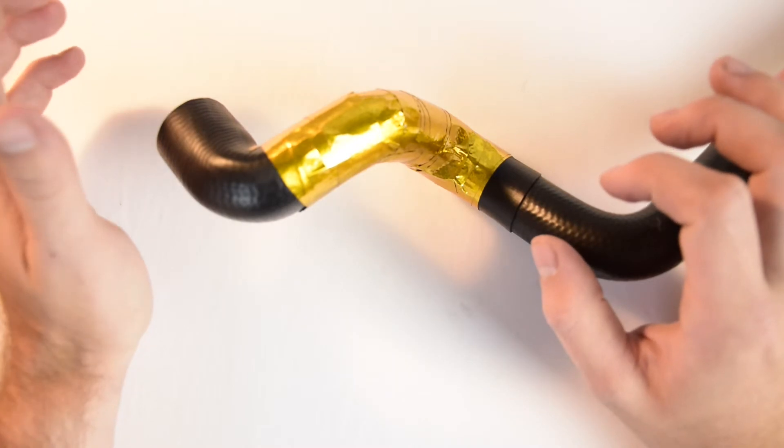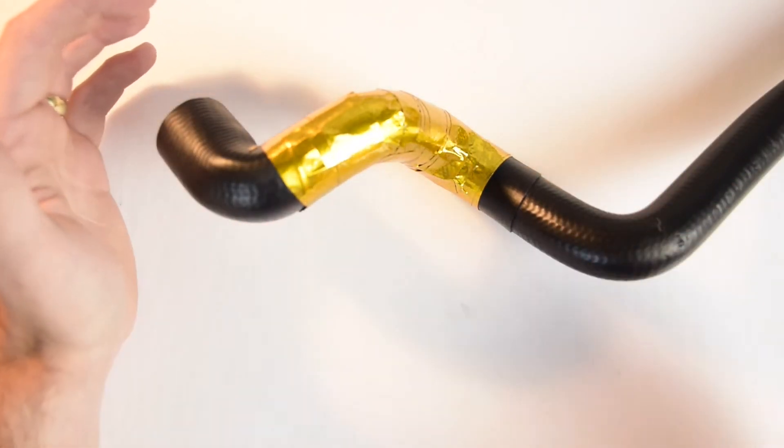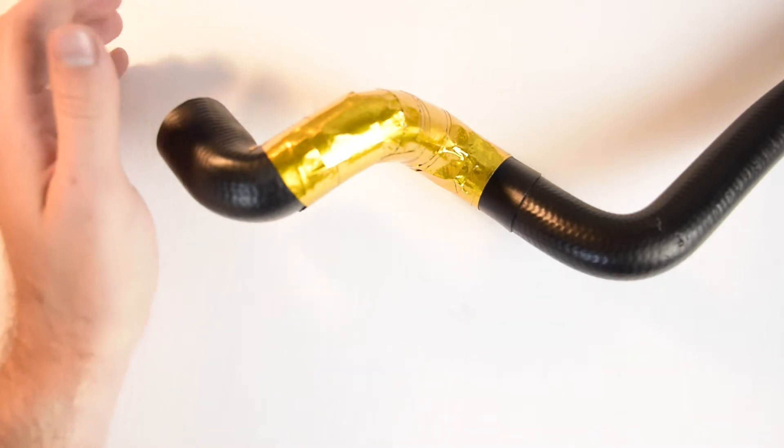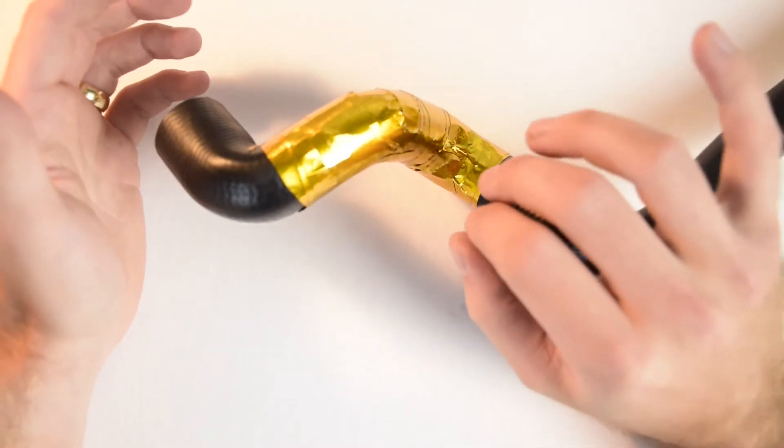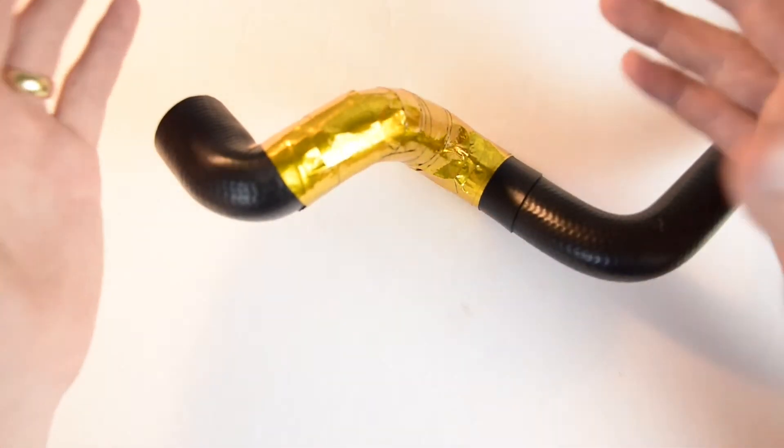When you get to hoses and complex shapes such as air intake pipes that might have 3D compound curves, you'll notice that it is actually difficult to put down the tape if you don't know what you're doing. So in this case we just wanted to give you a few tips on how to make installation easier.